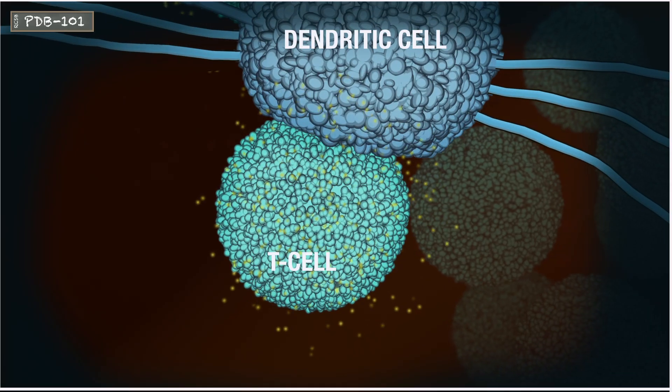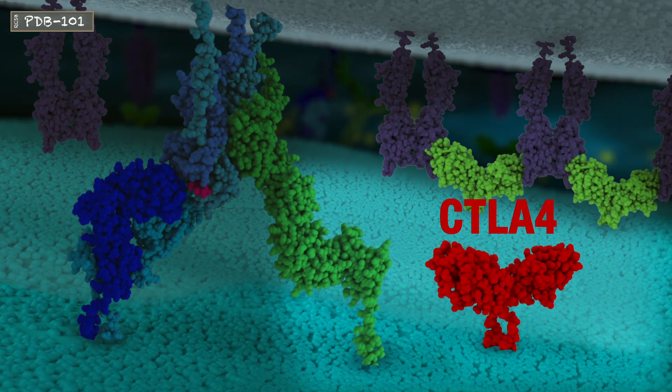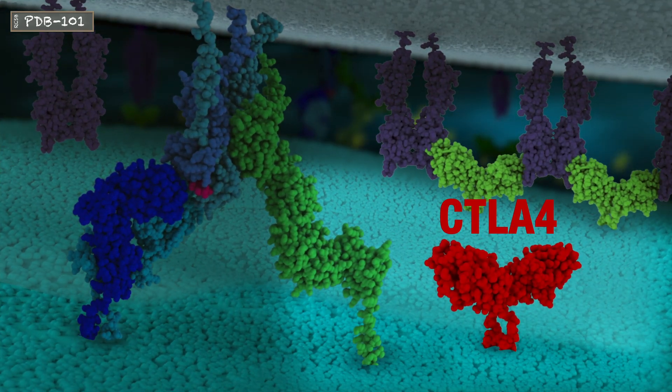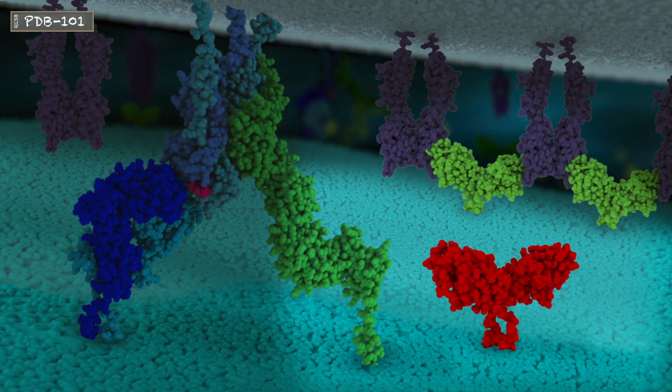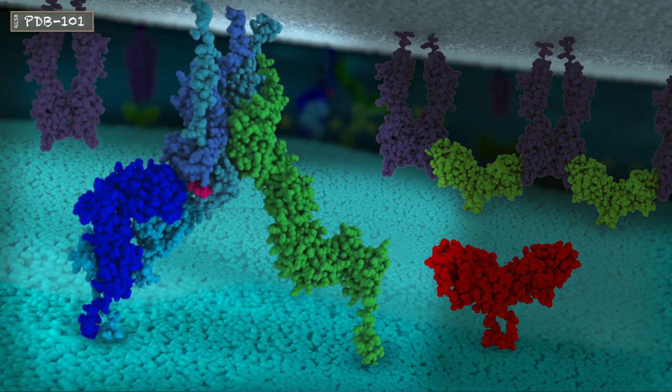A prominent immune checkpoint involves the CTLA-4 protein, which operates early in the immune response and acts as a brake on T cell activation. During the primary signal,